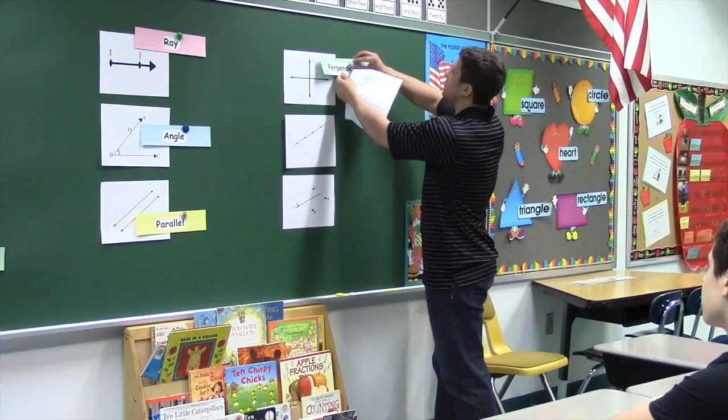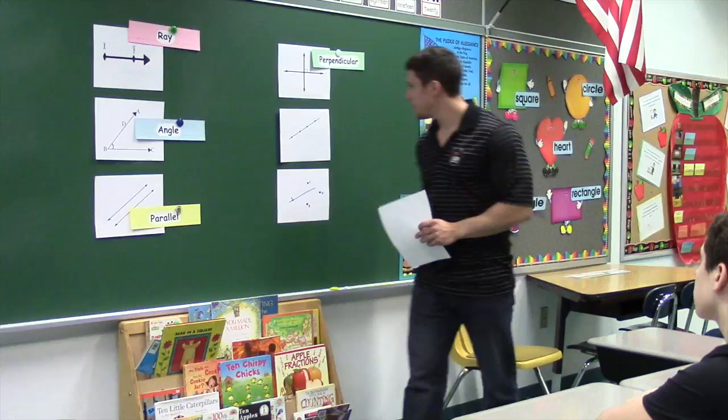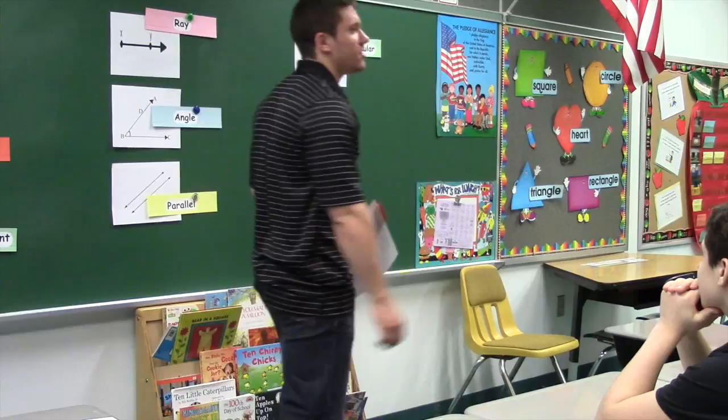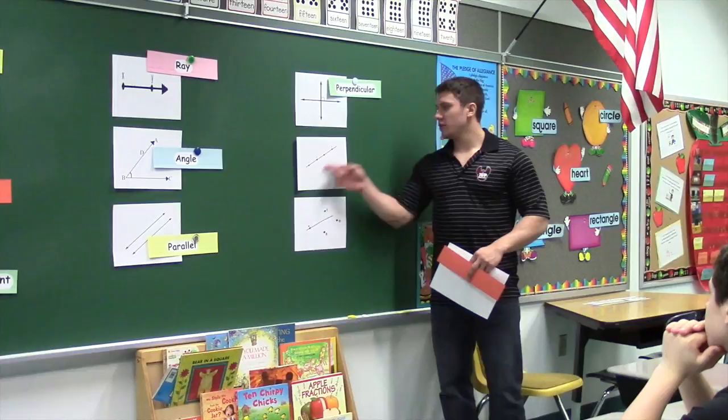If we have a line and on this line we have, let's say, four points — so four points on this line, they're all on the same line — we'll call that collinear. They're all on the same line.